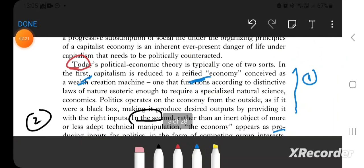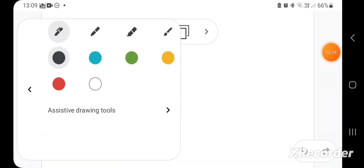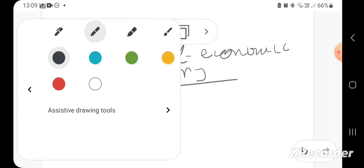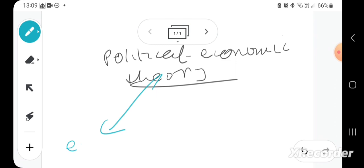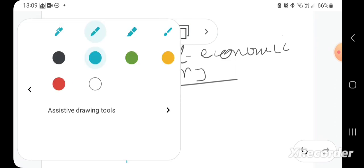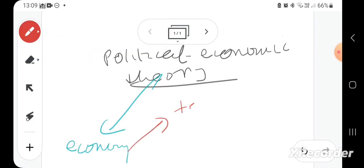Look at these whites first. So he's saying political economic theory today is of two sorts, and he's going to criticize both of them. One sees economy as something technical.